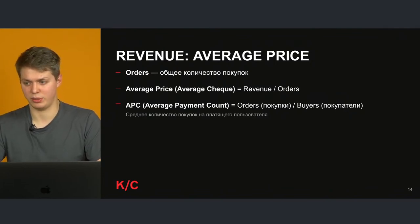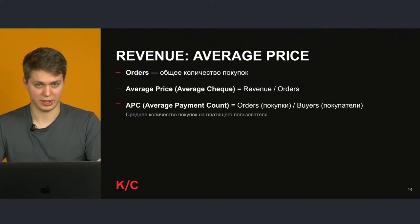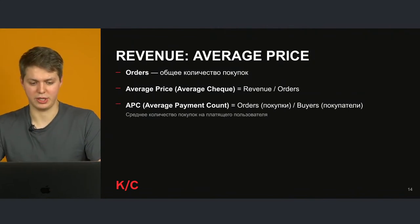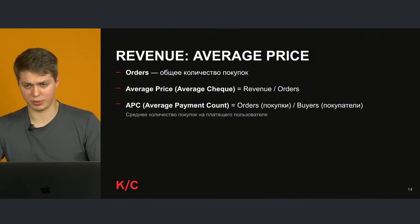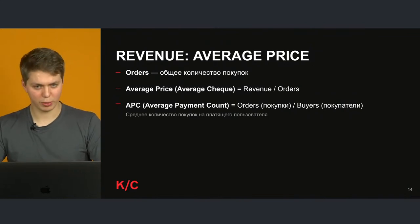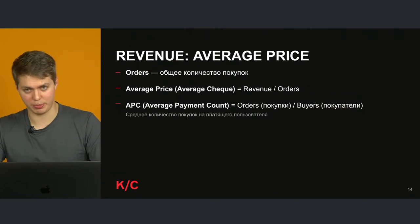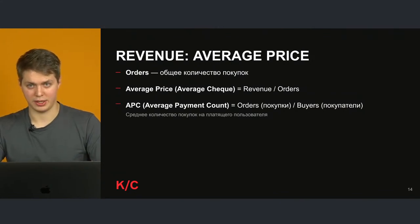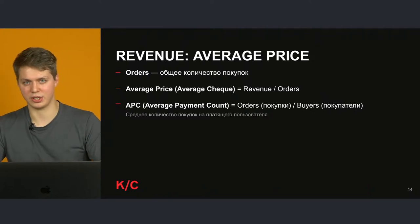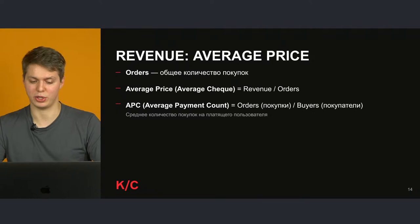Например, если платящий пользователь в среднем совершает 4-5 покупок в месяц, можно с менеджером понять, что людям, которые платят, можно после 4-й покупки предлагать скидку. Те, кто уже готов платить, для них это будет приятно — они совершат ещё 4-ю или 5-ю покупку. Это положительно скажется на юнит-экономике приложения: на пользователя будем зарабатывать ещё больше.